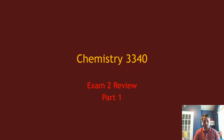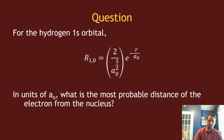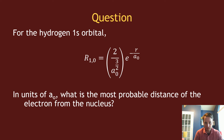In this video we will start doing some example problems to review for exam two. The first example is the radial function for the hydrogen atom 1s orbital, and the question is: what is the most probable distance of the electron from the nucleus in this function?